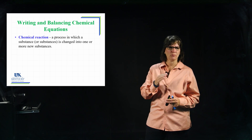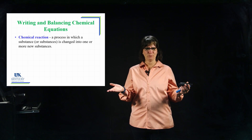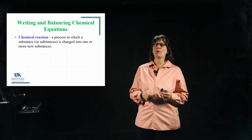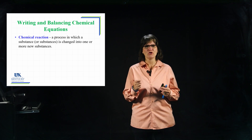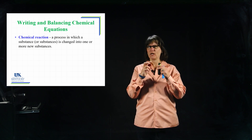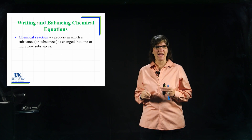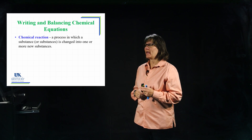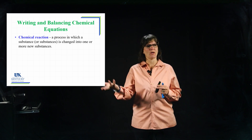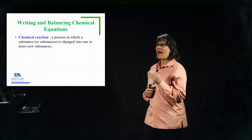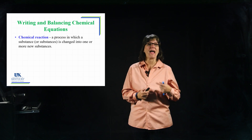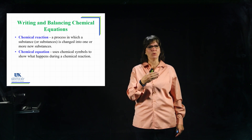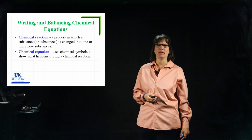What's the chemical reaction and chemical equation — what are they defining? A chemical reaction is the actual process. If I were to take some hydrogen and oxygen, light a match to it and it goes boom, that's a chemical reaction. The hydrogen is reacting with the oxygen and there is a change to a new substance — it's going to produce water. That is the chemical reaction, the actual process.